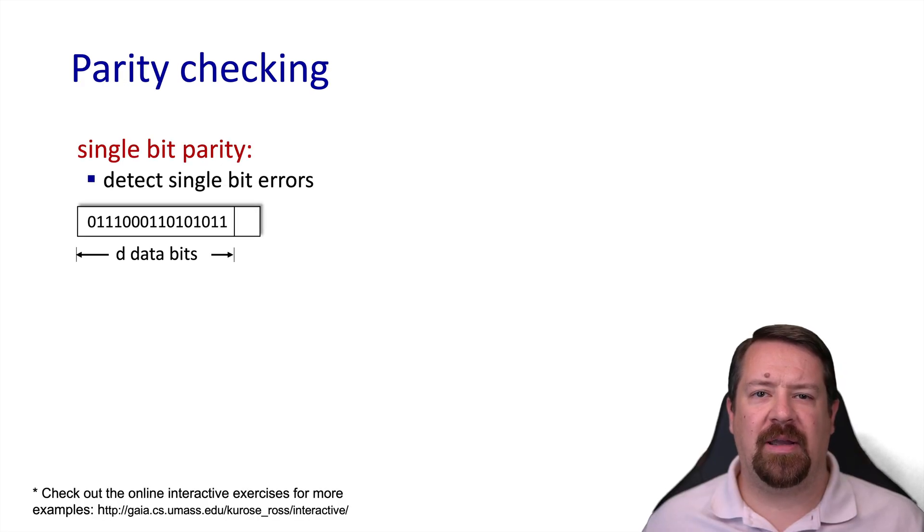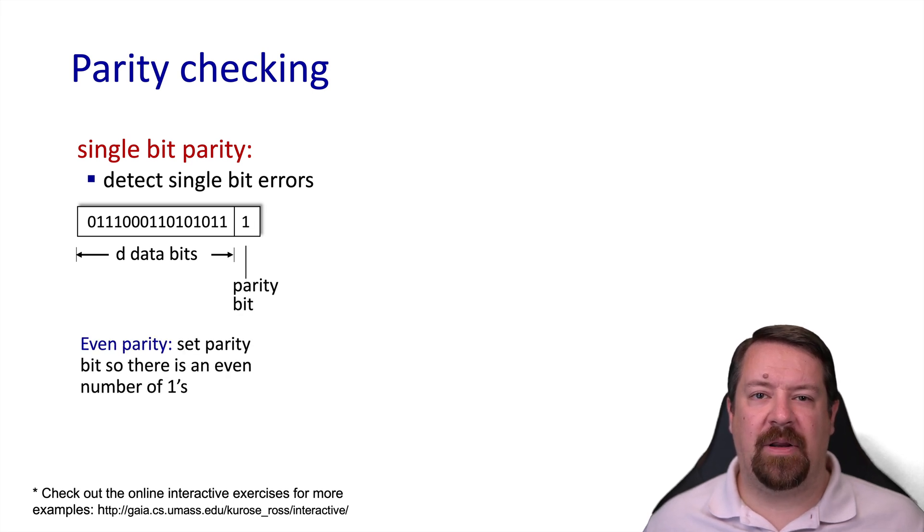A common form of error checking is known as parity checking. For example, with a given number of data bits, D, we can follow it with a parity bit that causes some mathematical relationship to be true. In this case, we are causing there to be an even number of ones when the data bits and parity bit are combined. So, in this case, there were an odd number of ones in D, and so we added one more with the parity bit, so now there's an even number of ones in total. If there were already an even number of ones in D, we would set the parity bit to zero.